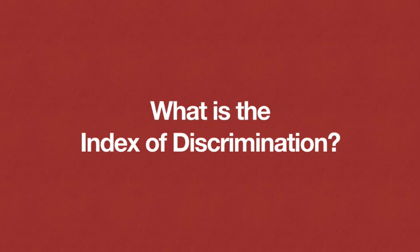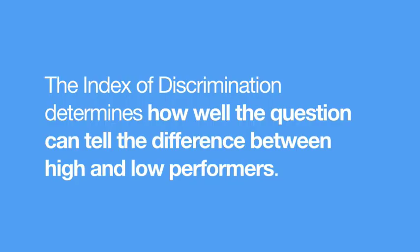So what exactly is the index of discrimination? Well, the index of discrimination goes a step beyond item difficulty. It looks at who answers a question correctly and examines the difference between groups of students. Simply put, the index of discrimination determines how well the question can tell the difference between high and low performers. This number will really come in handy when we need to decide whether or not our question is good at telling us who's understanding the topic and who is not — thus, discrimination.